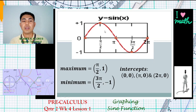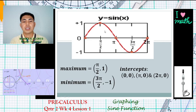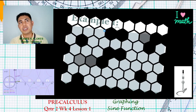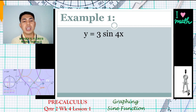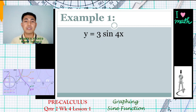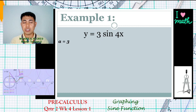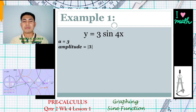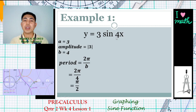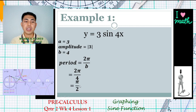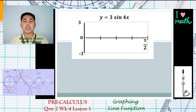Now let's apply this to an example with phase shift. Our function is y = 3sin(4x). From the steps, we identify a = 3, so the amplitude is 3. Our b = 4. From the period formula, 2π over 4 = π/2. So one period of 3sin(4x) is π/2.